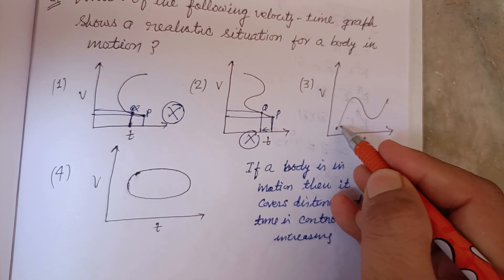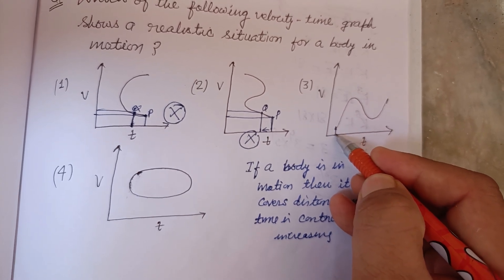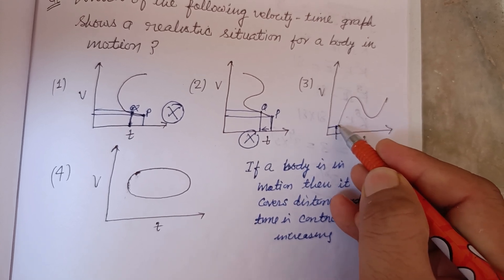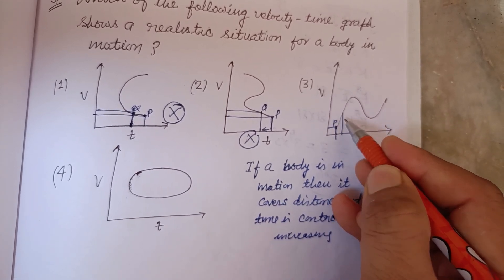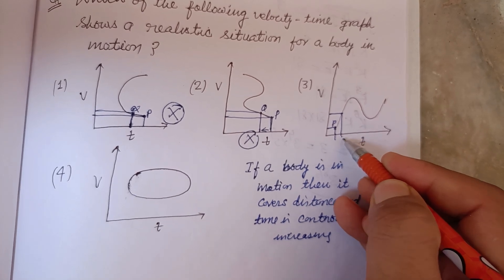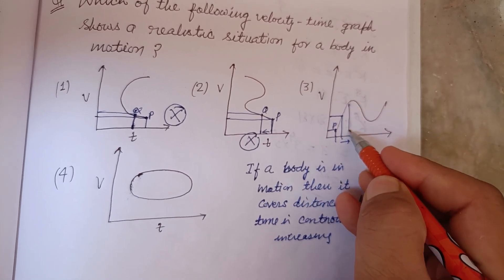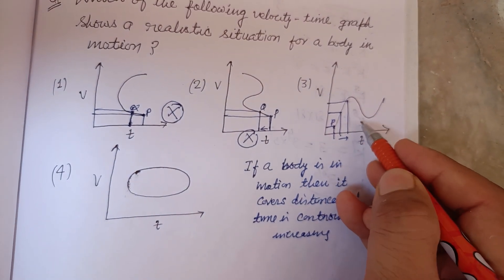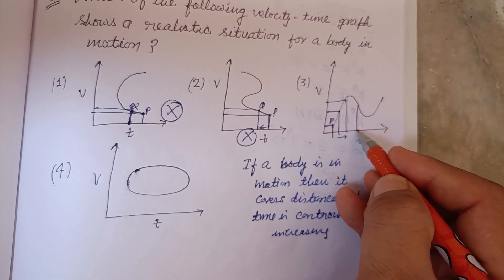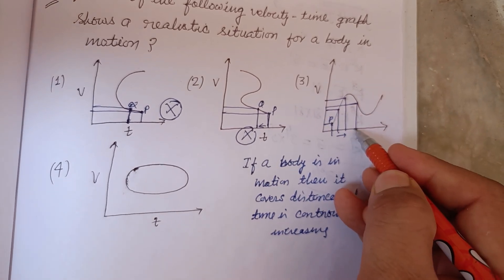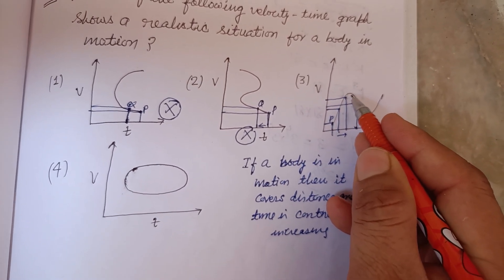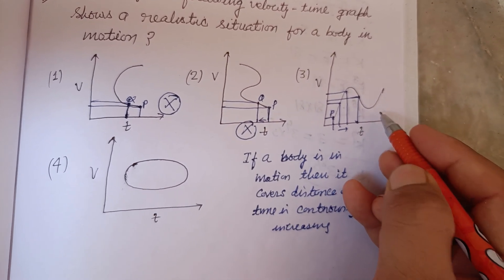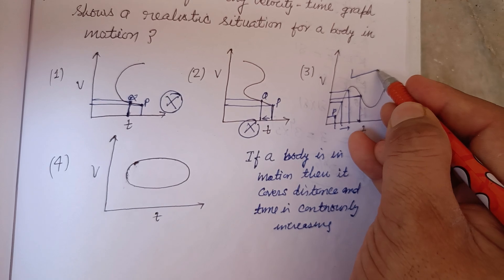In the third graph, if the particle starts here, velocity is increasing and time is also increasing. Looking at different points, velocity can increase or decrease, but time is always increasing. So this graph shows a realistic situation of motion.